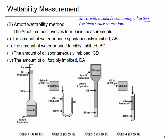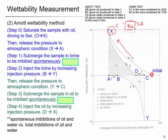You put this rock sample in water to submerge it. If this rock is water-wet, it sucks the water — you have spontaneous imbibition. The water will spontaneously imbibe into the rock sample, displacing the oil, so you have a little bit of oil produced. That is the point from A to B.